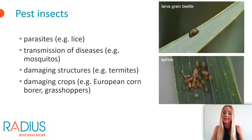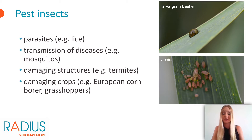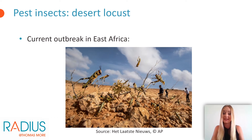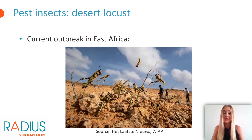Insects often get a negative connotation as pests. Just think of parasites such as lice or mosquitoes that serve as vectors for malaria. Furthermore, insects can also cause major damage to crops or infrastructures. A very topical example of pest insects is the locust plague that is currently afflicting East Africa. The humid climate, due to the exceptional rain last year, has led to the largest locust plague in 70 years. Swarms of the desert locusts up to 100 km wide eat crops, leaving millions of people in famine.